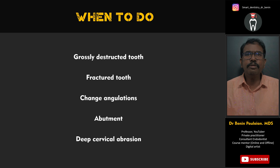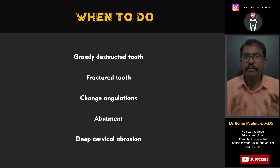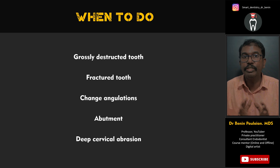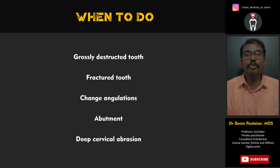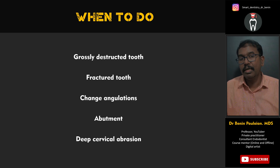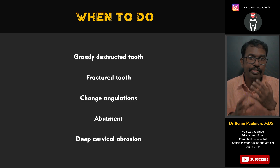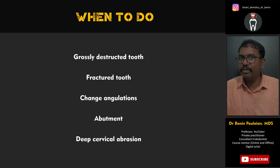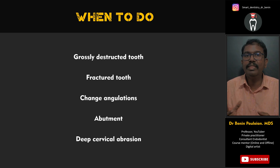When do we actually need to place a post? Not in all clinical situations. Indications include: a grossly destructed tooth where at least one cusp is totally missing; a fractured tooth at the cervical one-third where a crown must be placed; and specifically when we want to change the angulation — most commonly in anterior teeth where a patient presents with trauma and fracture involving a proclined tooth, and we need to change the crown angulation.